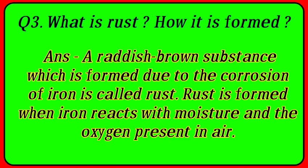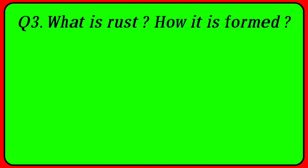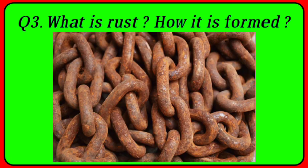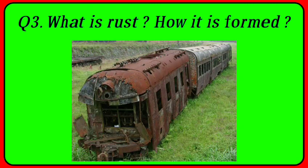Insight Question: Rust is a reddish-brown substance formed due to corrosion of iron. It occurs when iron reacts with oxygen in the presence of air and moisture.